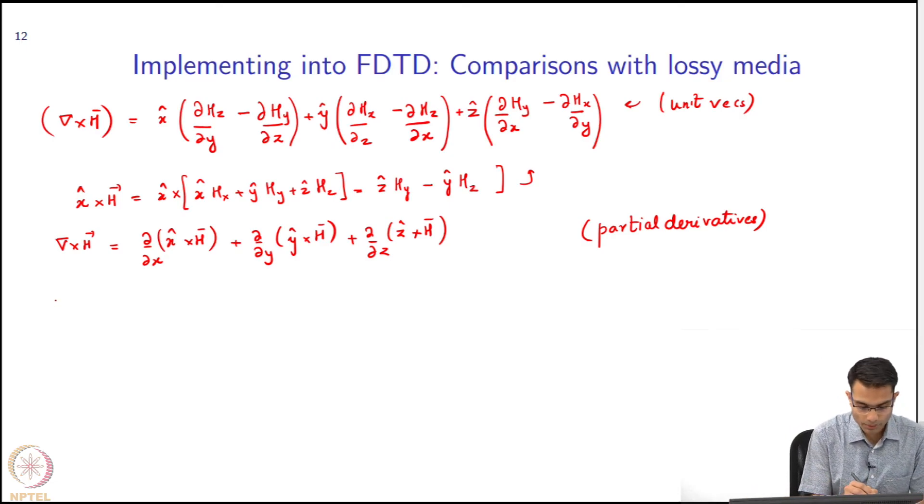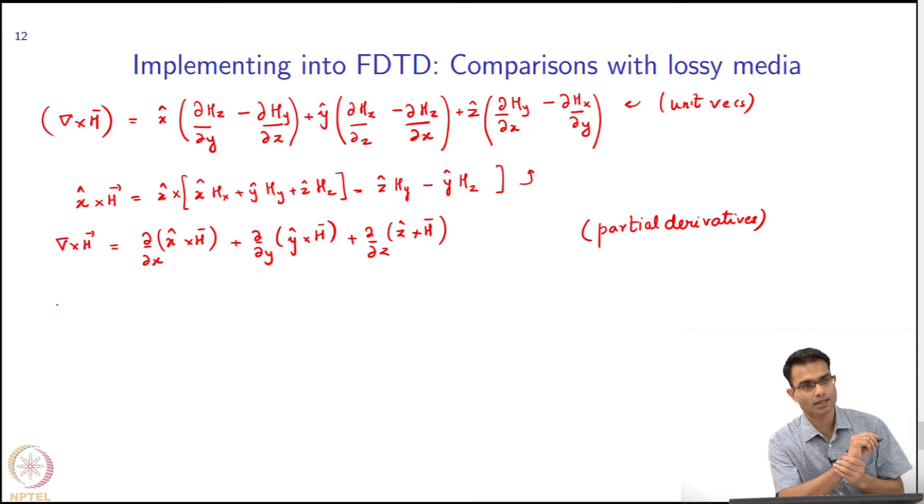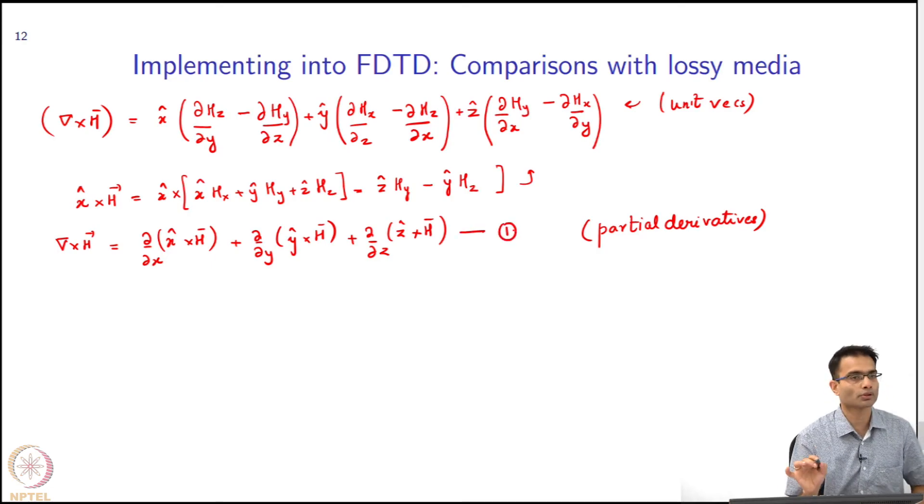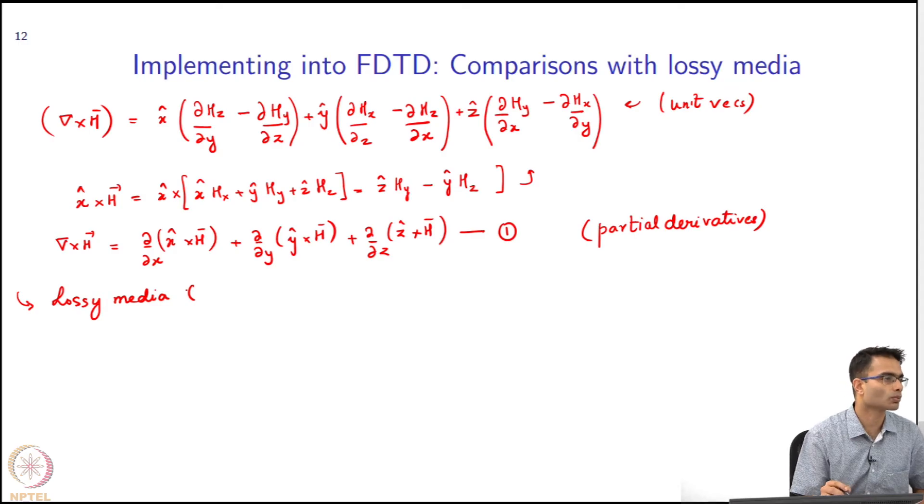Now, to make the implementation into FDTD, we will use something which we already know: how to deal with lossy media. So let us put this equation 1 on hold and we will see the comparison next. We look at lossy media and we will use something very simple: Ohm's law, which we have already done before.